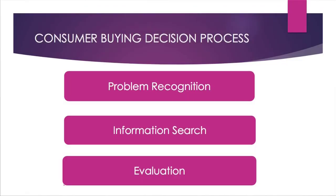Now I will discuss the consumer buying decision process. This process goes through several steps. The first step is problem recognition — the consumer identifies what type of product they require. The second stage is information search, where the consumer goes through different information related to that product or service. For example, if I want to purchase a car, in the information search stage I will go through all advertisements, bulletins, newspapers, and other information to decide which car to buy.